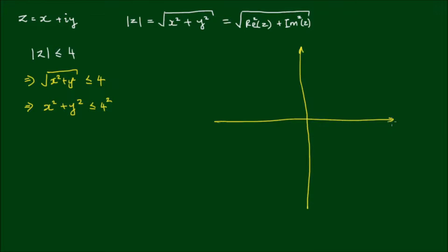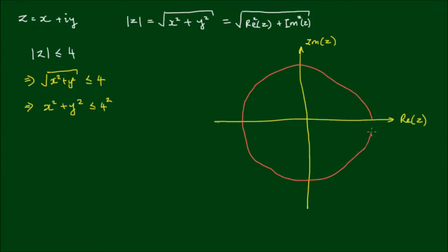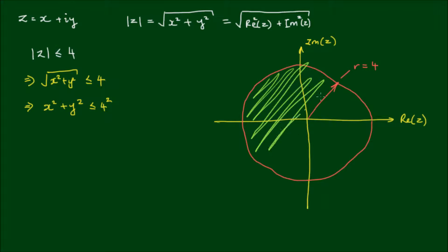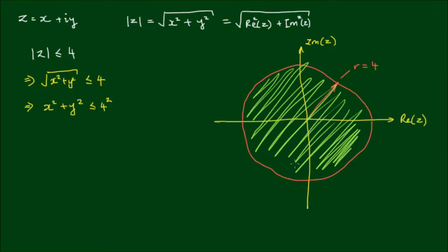The imaginary component is on the vertical axis and the real component is on the horizontal axis. Complex numbers can lie on the edge of the circle of radius 4, or inside it. This circle has radius 4, and the locus is simply a disk centered at the origin of radius 4. Locus in mathematics simply means all points that satisfy an equation or a condition.